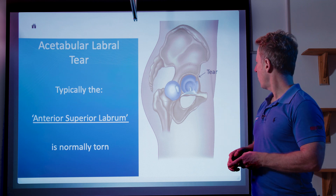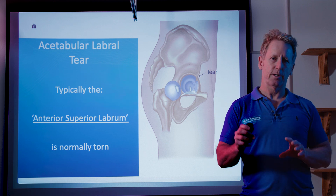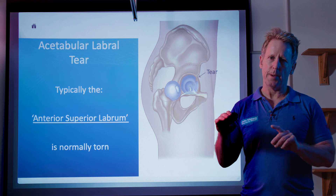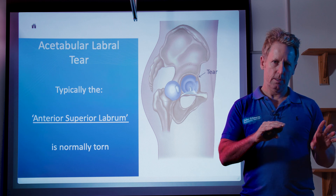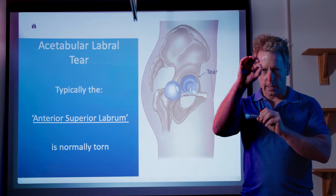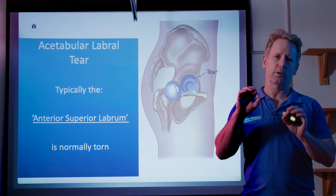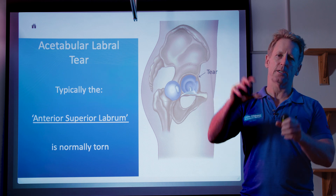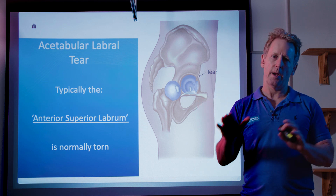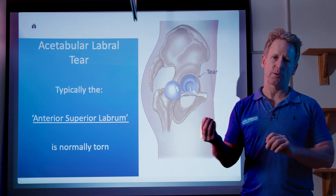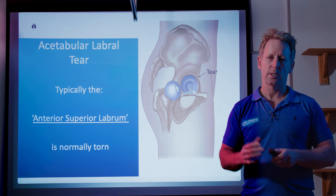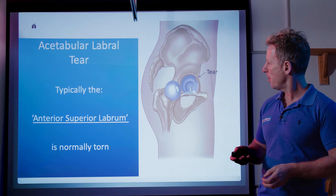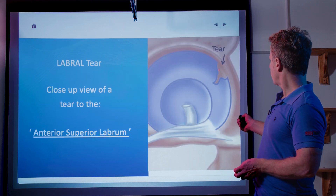If a labral tear is suspected, the diagnosis would be an MRA — a magnetic resonance arthrogram — which would be better than a standard MRI. With the injected fluid, it finds its way into smaller areas, and if there's a tear, the fluid will show up underneath it when scanned. The problem with an MRA is you have to have a guided ultrasound injection from a radiologist as well as having the MRI — it's like a two-part scan — and that's where the tear would be identified.